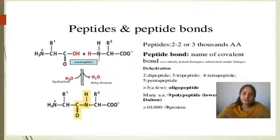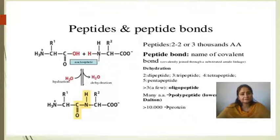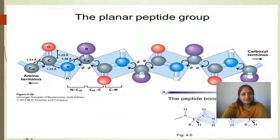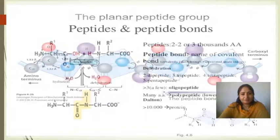The first amino acid contributes its COOH group and the second amino acid contributes its NH2 group. Through the dehydration process, water is removed and the resulting bond is known as the peptide bond. This bond connects C and N atoms. The N-H and C=O groups are part of this planar peptide bond structure.